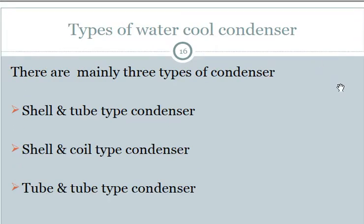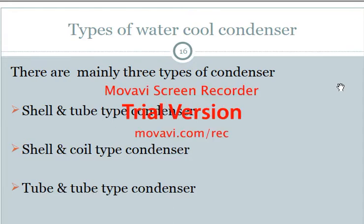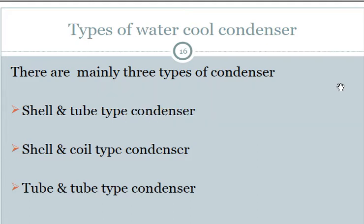There are three types of water-cooled condensers: the shell and tube type, the shell and coil type, and the tube-in-tube type. We will go through each one.